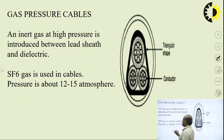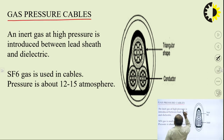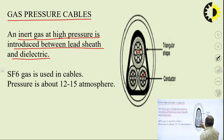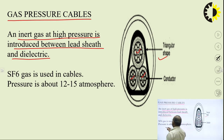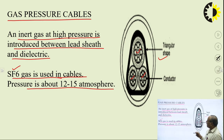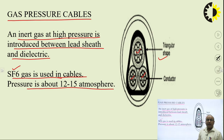The next type is gas pressure cable. These cables use an inert gas at high pressure, introduced between the lead sheath and the dielectric. The gas used is SF6 — sulfur hexafluoride — and the pressure maintained is approximately 12 to 15 atmospheric pressure. That is why these cables are known as gas pressure cables.